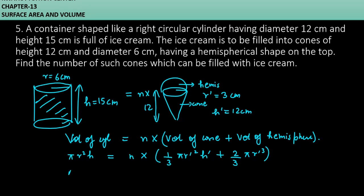Because pi is everywhere. Pi r square h is equal to n into pi common, I am taking here. Pi is common, 3 is common, and r dash square h dash plus 2 r dash cube.